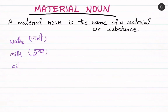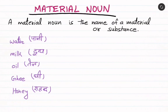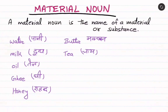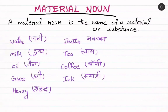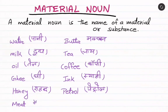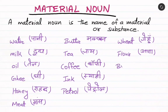Examples of material nouns include water, milk, oil — substances we cannot count but can measure — ghee, honey, butter, tea, coffee, ink, petrol, meat, wheat, flour, bread, paddy, rice, and gram.